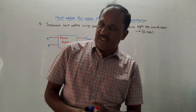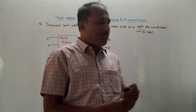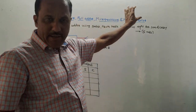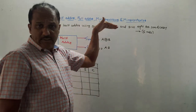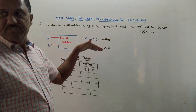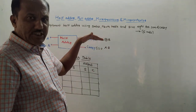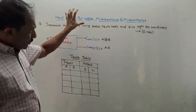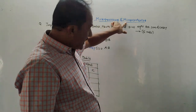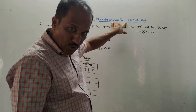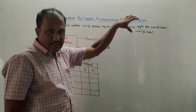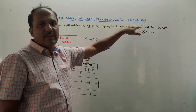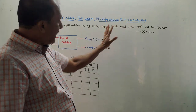Hello and welcome back to this channel. Dear students, today's topic is half adder, full adder, microprocessor and microcontroller. This is the topic related to the subject basic electronics engineering for first year engineering students. Out of this topic, microprocessor and microcontroller is the most important — specifically the block diagram of these two and the comparison between them.